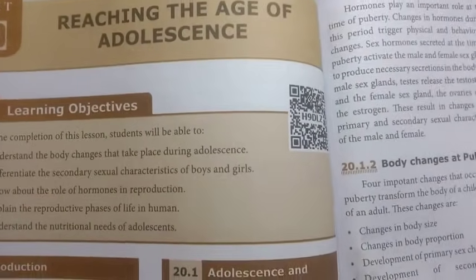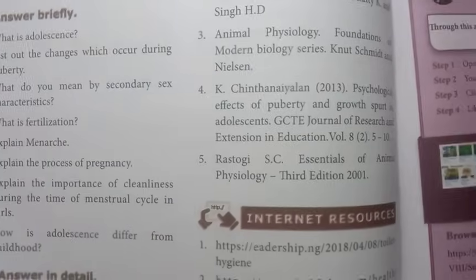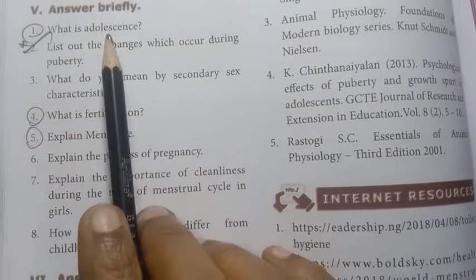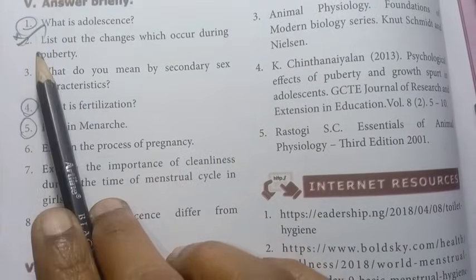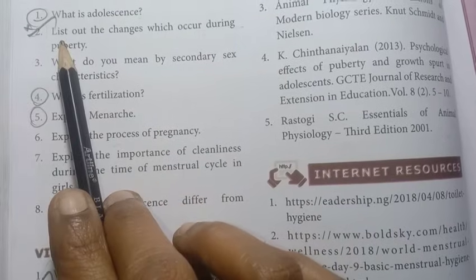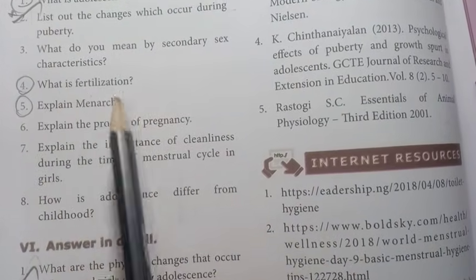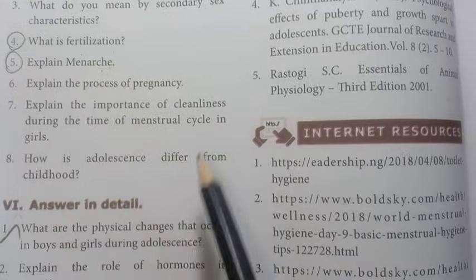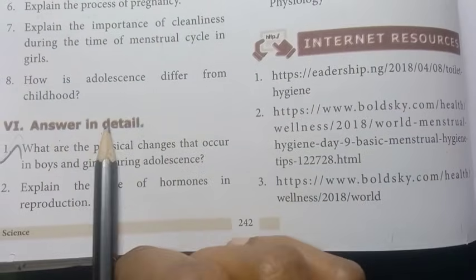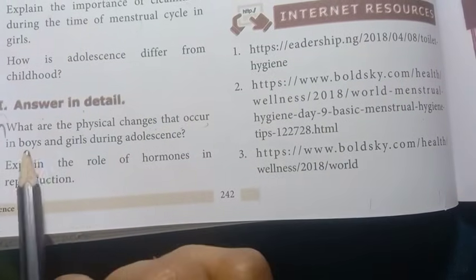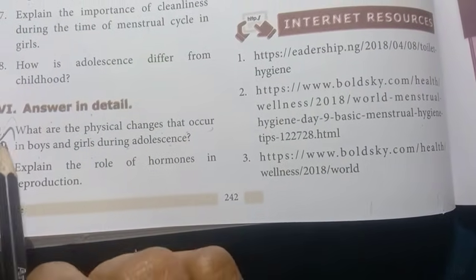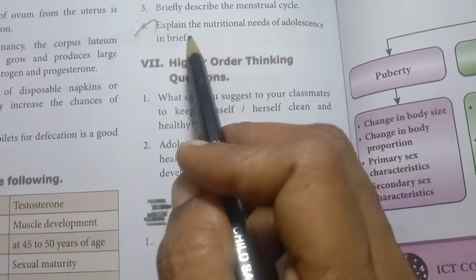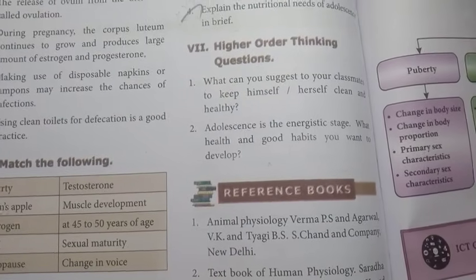Unit 20: Reaching the Age of Adolescence. This lesson has 2-mark, 5-mark, and 7-mark questions. Answer briefly: What is adolescence? List out the changes which occur during puberty — previous year question. What is fertilization? — important. Explain menarche — important. Answer in detail: What are the physical changes that occur in boys and girls during adolescence? — previous year question. Explain the nutritional needs of adolescence in brief — 7-mark important question.